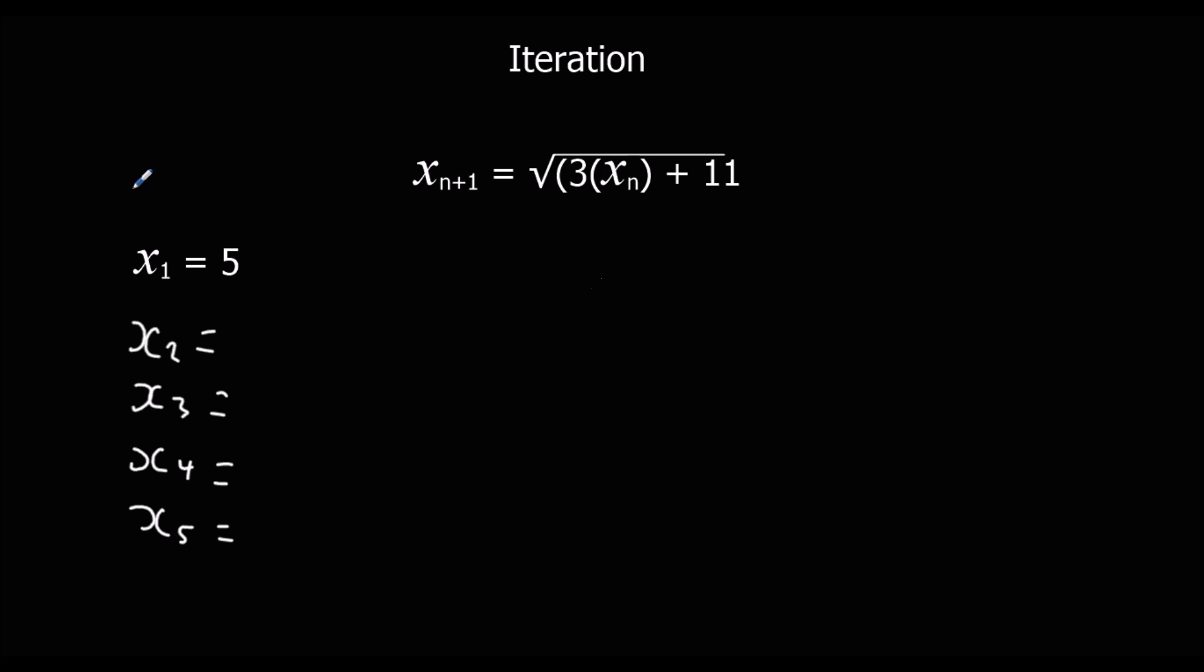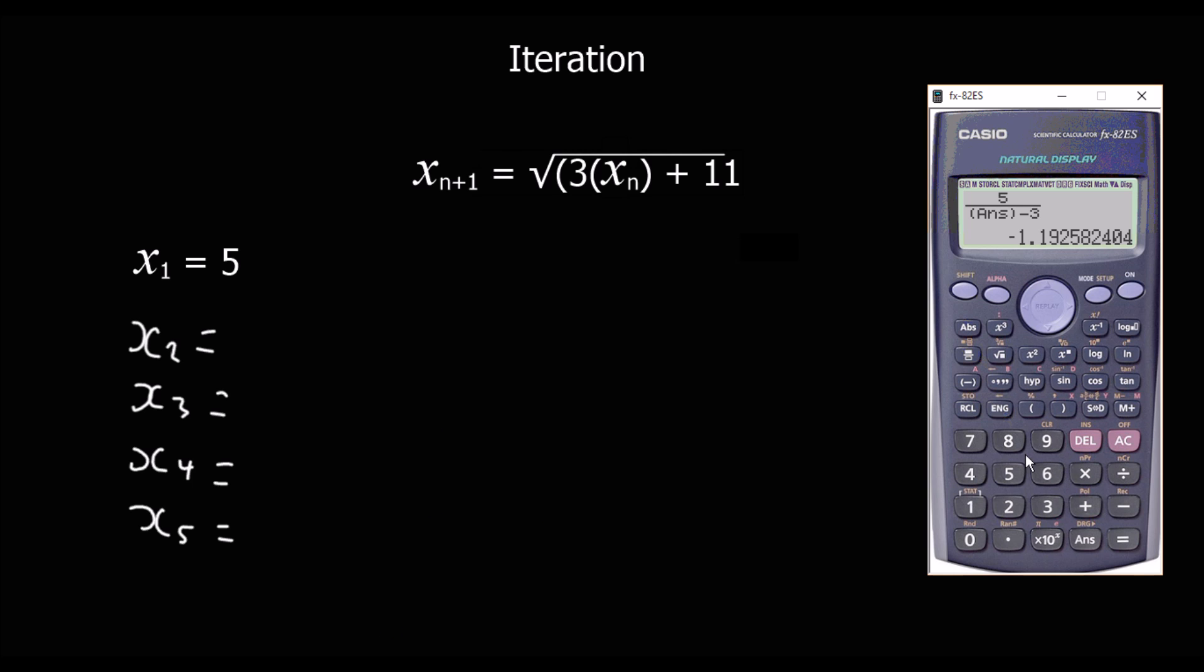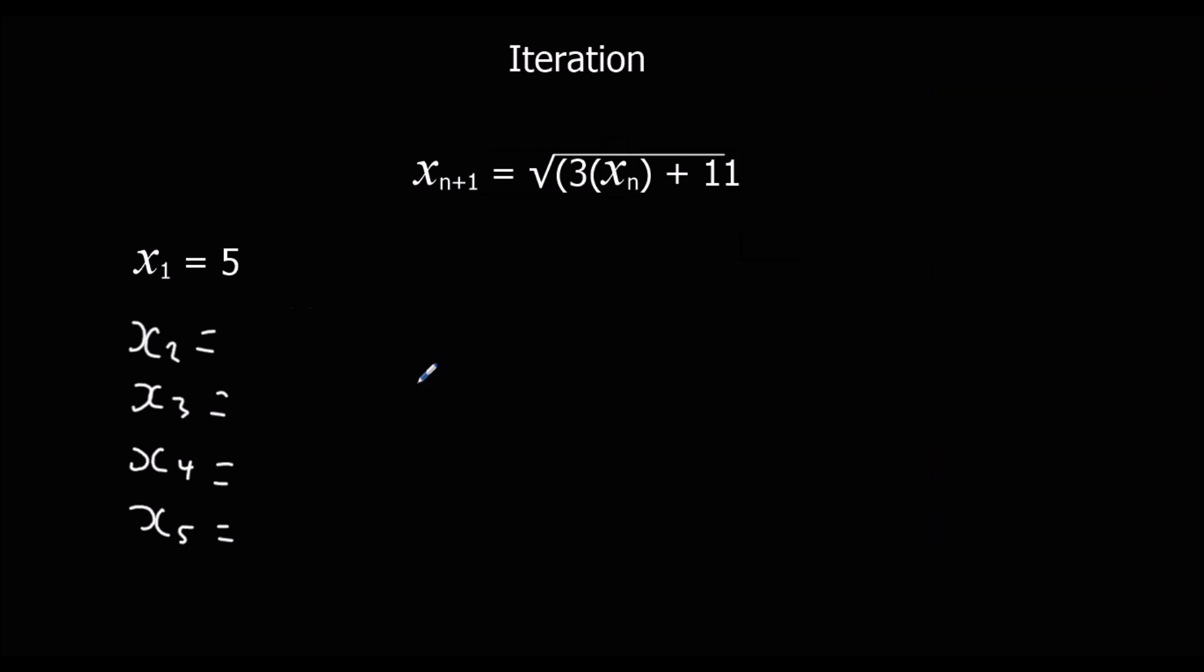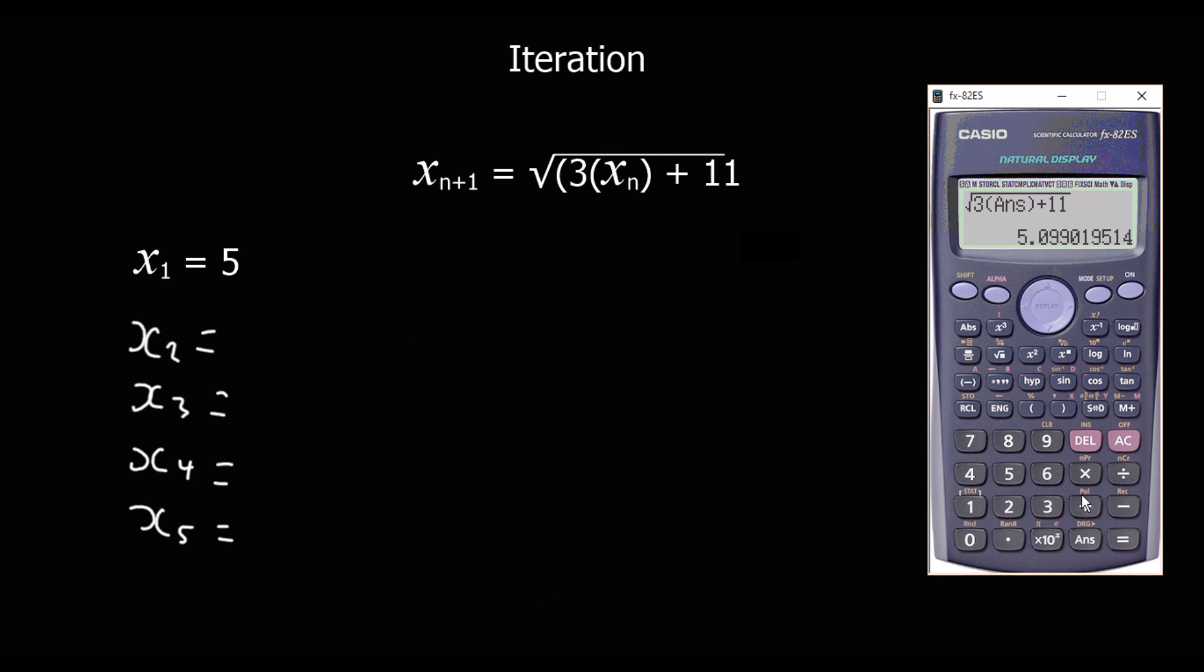So you want to get 5 into the answer button in the calculator. So you want to press 5 equals. 5 into the answer button. And then we're going to set up in the same way before. Square root of this times 3 times the answer, which we've got as 5 now, plus 11. So if I press equals, that gives me x2. So that's x2. So we could write that down as our answer. Get my pens out, I think. So that's x2, x3, x4, and that's x5.